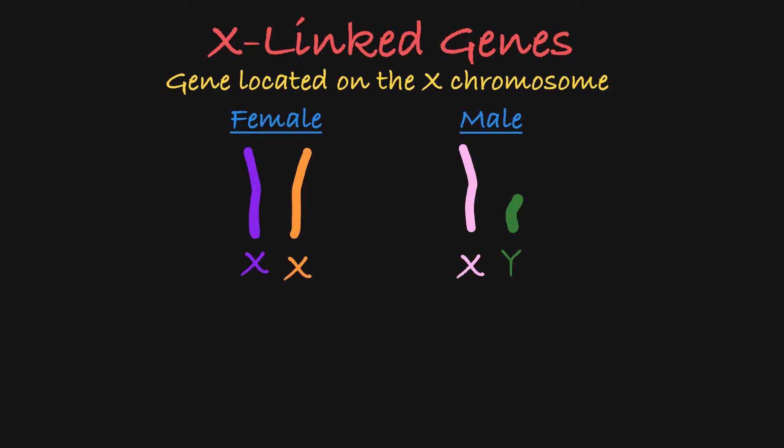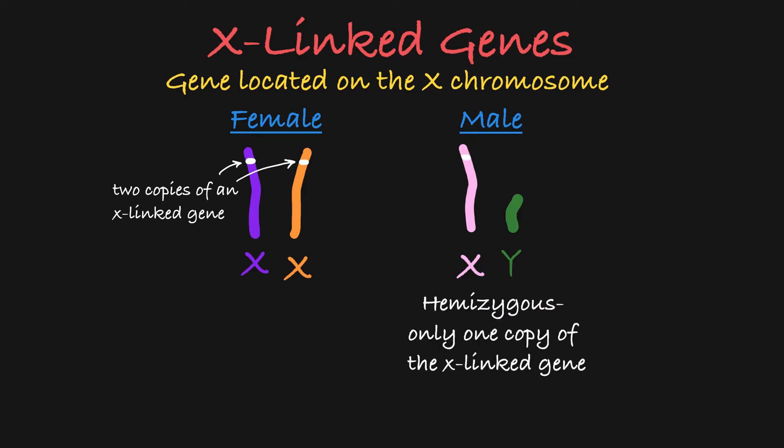As a result, females carry two copies of each X-linked gene, while XY males are hemizygous, meaning they carry only one copy of each X-linked gene.